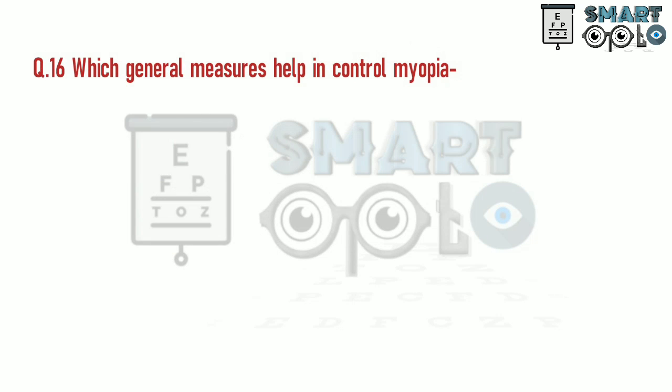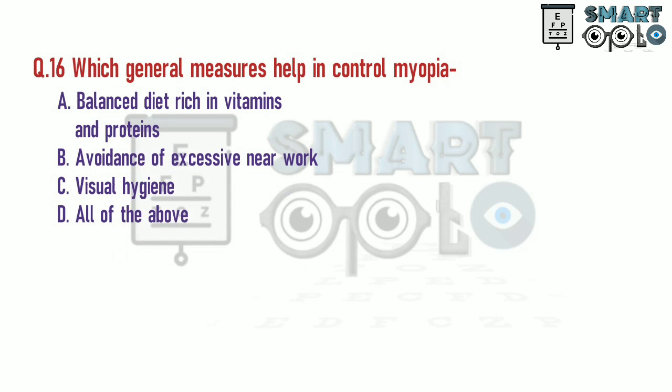Q16. Which general measures help in controlling myopia? A. Balanced diet rich in vitamins and proteins. B. Avoidance of excessive near work. C. Visual hygiene. D. All of the above.